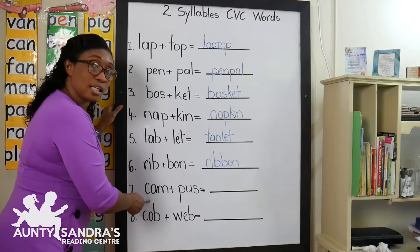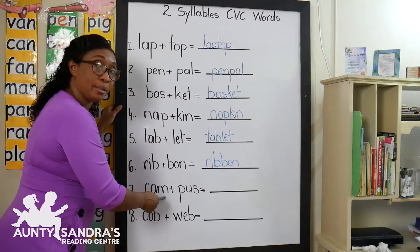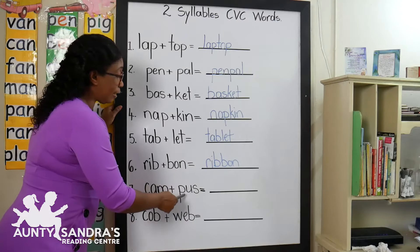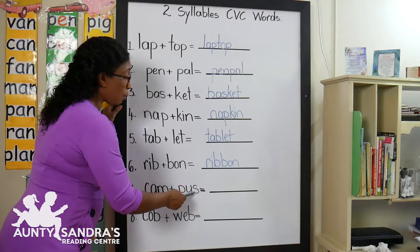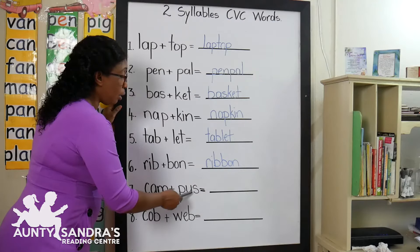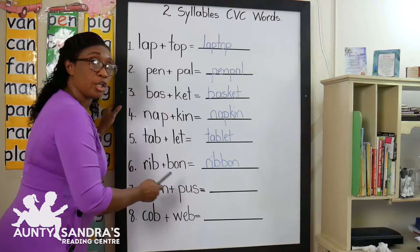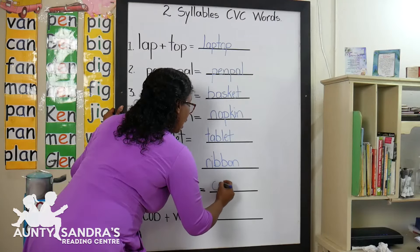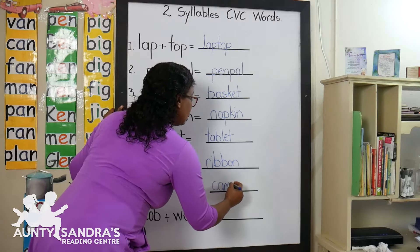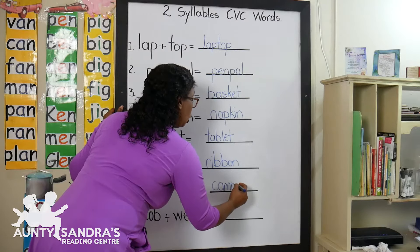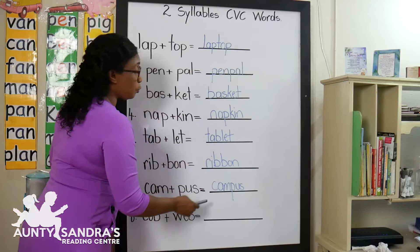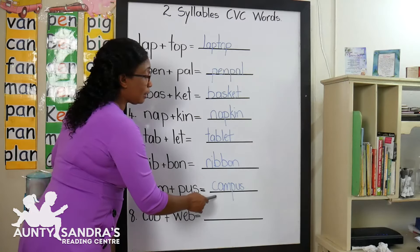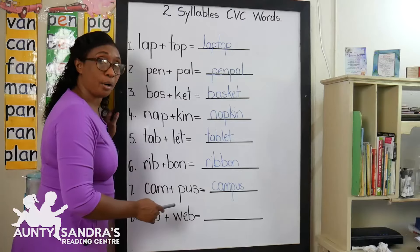The next syllable is C-A-M, Cam. And then P-U-S, Pus. Now we are going to combine our two syllables together — Cam and Pus — and we get campus. Campus. Again, campus.